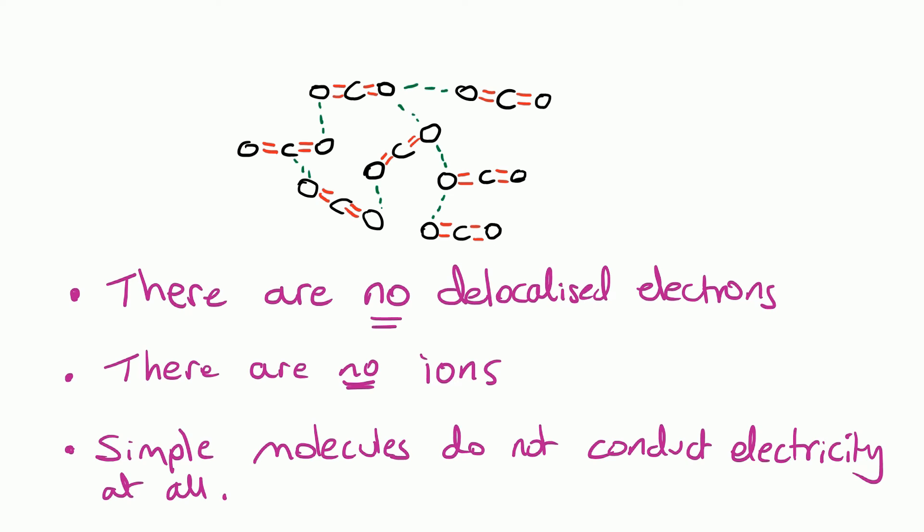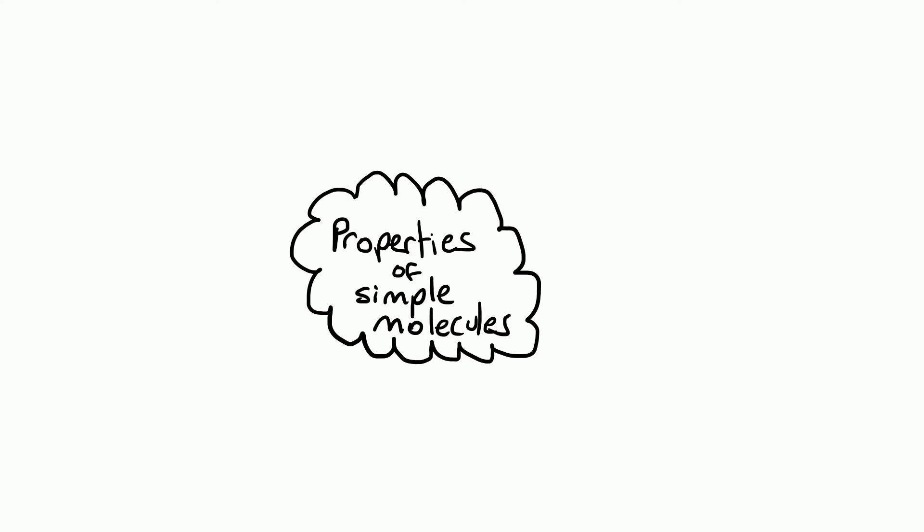Finally we're going to summarize the properties of simple molecules. And more importantly explain why they have these properties by talking about the structure and bonding of simple molecules. We're going to summarize it as a mind map. This can be a very powerful tool in your revision. So first of all remember simple molecules have low melting points and low boiling points.